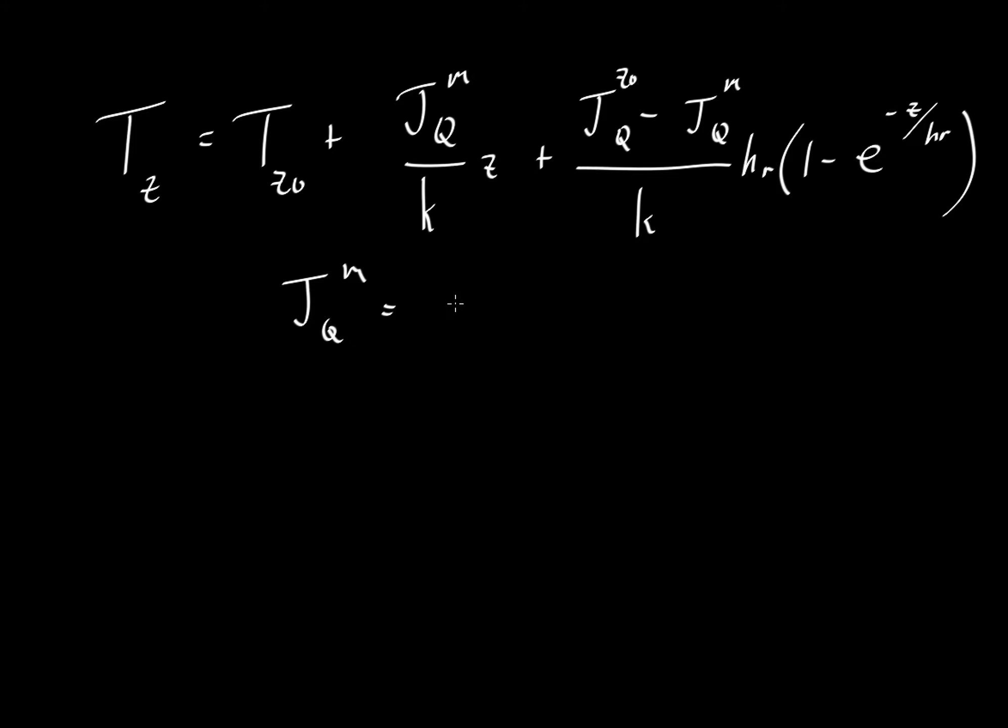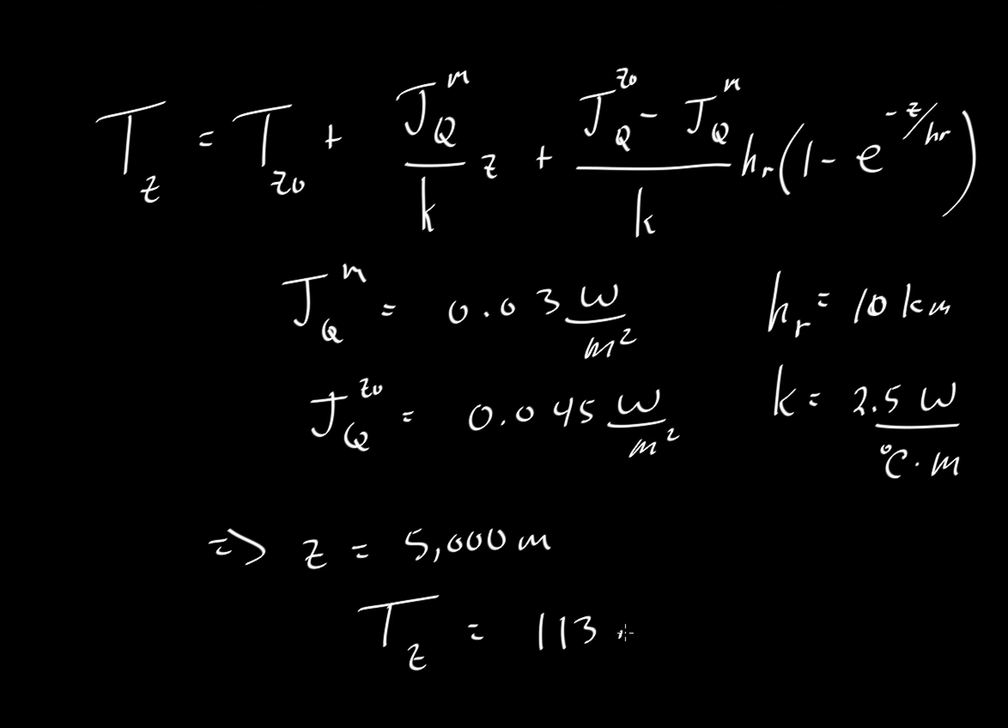So if we let J_Q be equal to 0.03 watts per meter squared, that's a reduction compared to the J_Q at z naught that we used in an earlier video of 0.045 watts per meter squared. It's a little bit lower because we don't have the heat-producing elements. And then we let the interval over which the concentration of radioactive elements decays be 10 kilometers. And again, we'll let thermal diffusivity equal 2.5 watts per degrees centigrade times meters. Then if we put all those things in there, at z equals 5,000 meters or 5 kilometers, the temperature at that depth would be 113.6 degrees centigrade.